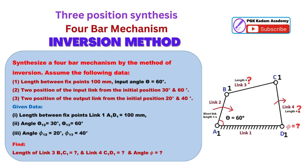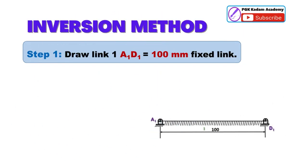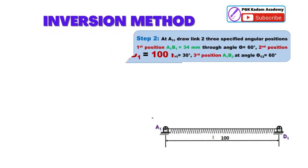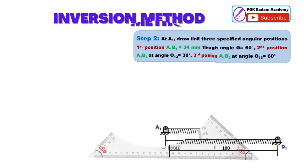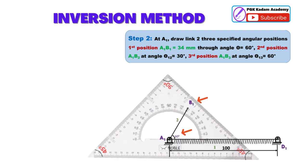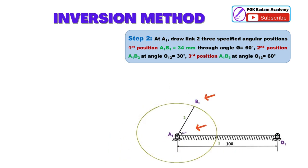To find at the end of this graphical problem: length of link 3 (B1C1), length of link 4 (C1D1), and output link angle phi. Step 1: Draw link 1, A1D1 equal to 100 mm, which is the fixed link. Step 2: At A1, draw link 2 in 3 specified angular positions. First position: A1B1 equal to 34 mm, through angle theta equal to 60 degrees.